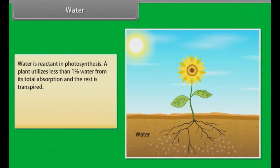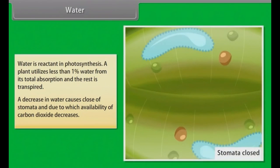Water: Water is a reactant in photosynthesis. A plant utilizes less than 1% water for its total absorption and the rest is transpired. A decrease in water causes closure of stomata, and due to which availability of carbon dioxide decreases.